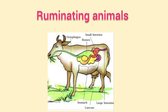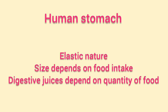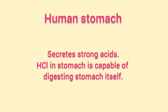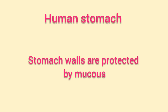The human stomach does not have a specific fixed volume — it is a pouch-like, elastic structure whose size increases based on the food consumed. Digestive juices are produced depending on the quantity of food. The stomach secretes strong acids during digestion; the HCl secreted by the stomach walls is strong enough to digest hard bones. Yet the stomach is protected from its own acids because of the mucus lining present in the stomach.